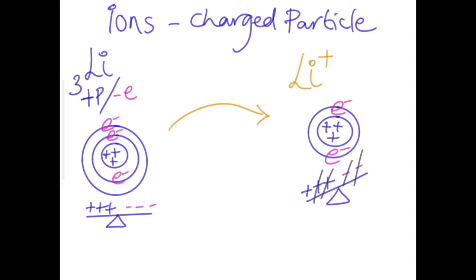So if you lose an electron, you become positive. If you gain an electron, you will become negative, because you will end up with more electrons than you actually started with as an atom.